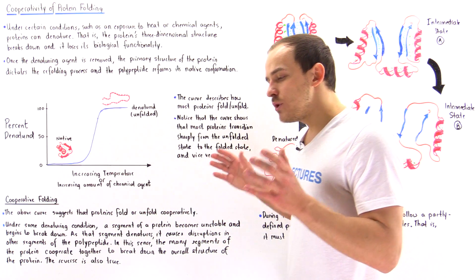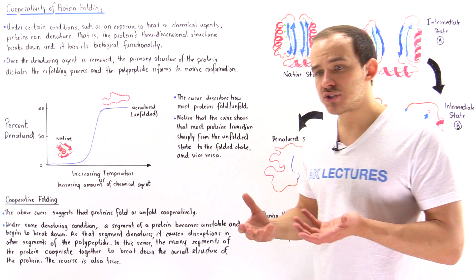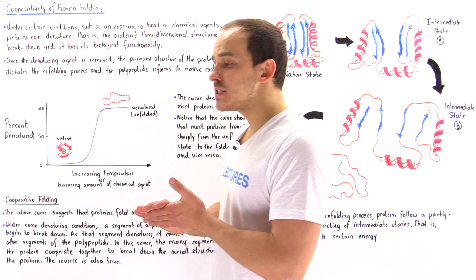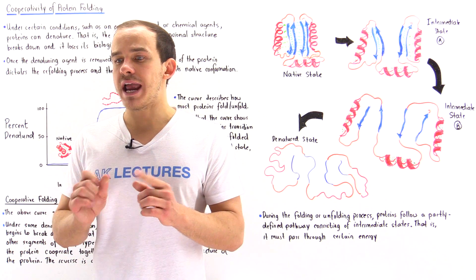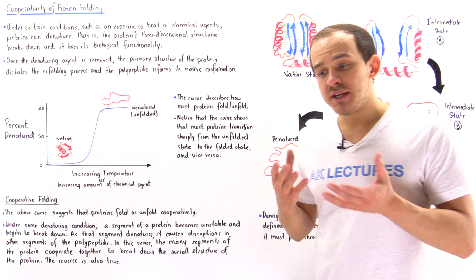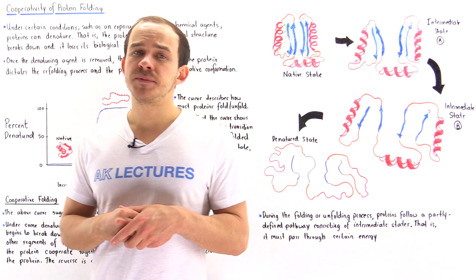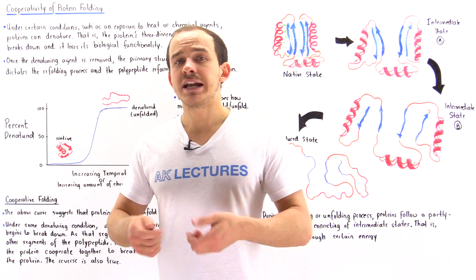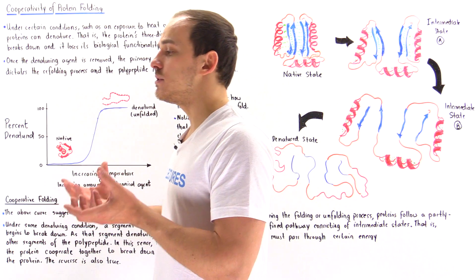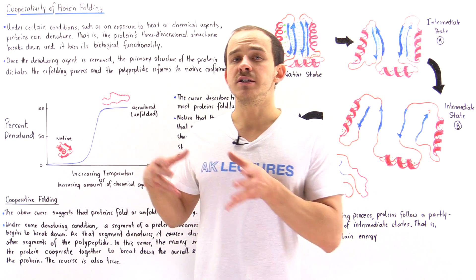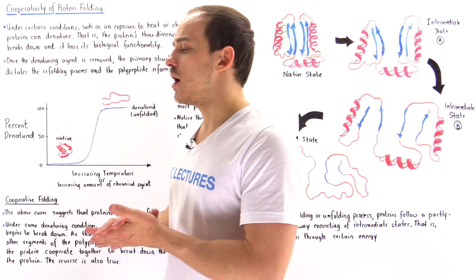At the same time, if we remove that denaturing chemical agent or decrease the temperature back to normal, that denatured polypeptide will begin to refold and eventually fold into the fully active native state. This happens because it is the primary structure — that specific sequence of amino acids — that determines the final three-dimensional structure of the protein.